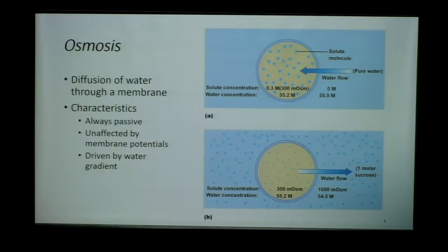We talked about osmosis being the movement, the passive movement of water. Passive meaning that it's not requiring energy — it's a downhill movement, happening along the concentration gradient. It's always going to be passive, and it's also going to be unaffected by the membrane potential.